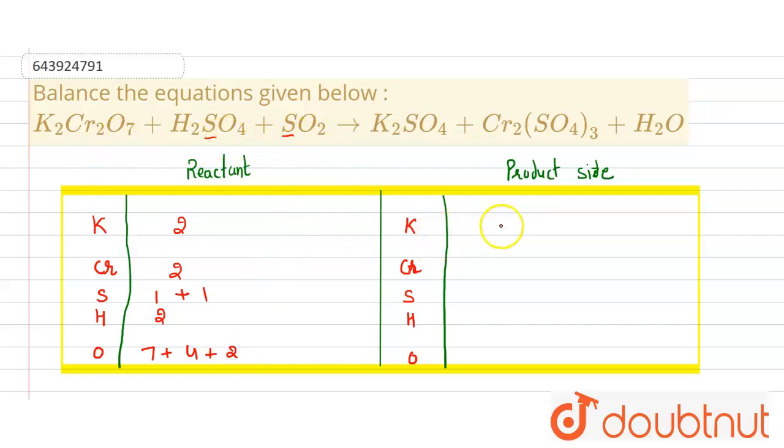Oxygen is 7 plus 4 plus 2 - here it is 2, here it is 4, here it is 7. On the product side, the number of potassium atoms is 2, chromium is also 2, sulfur is 1 plus 3 from this side. Hydrogen is 2, and oxygen on this side is 4 plus 12 plus 1.